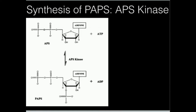This next step uses a simple enzyme called APS kinase. APS kinase is going to use a phosphate from ATP and transfer it onto the 3-prime hydroxyl group of APS, and that's going to make the molecule called PAPS — 3-prime phosphoadenosine 5-prime phosphosulfate, or just PAPS as most people call it.